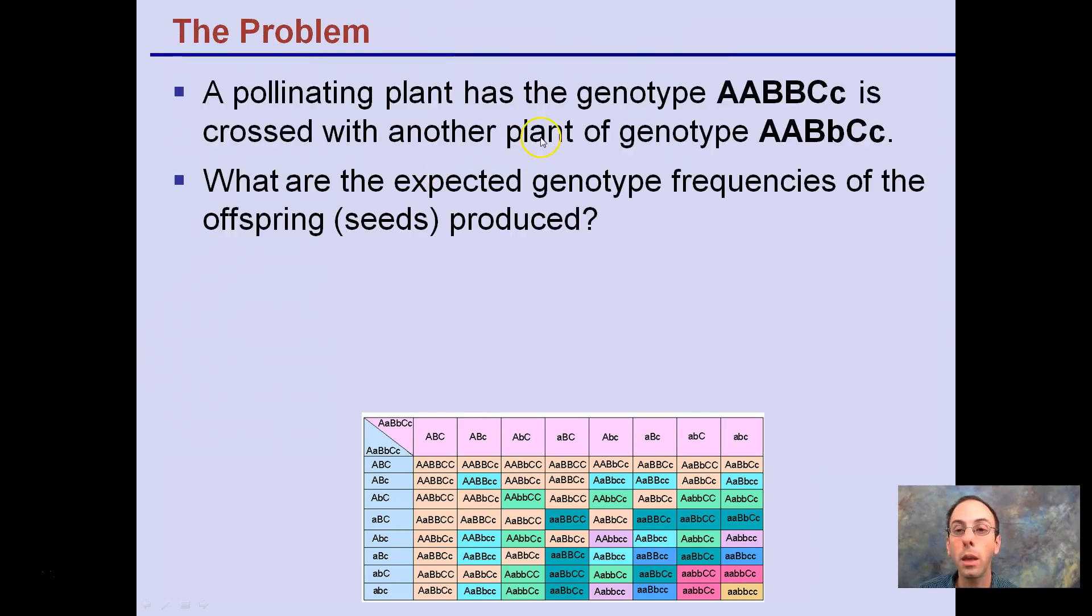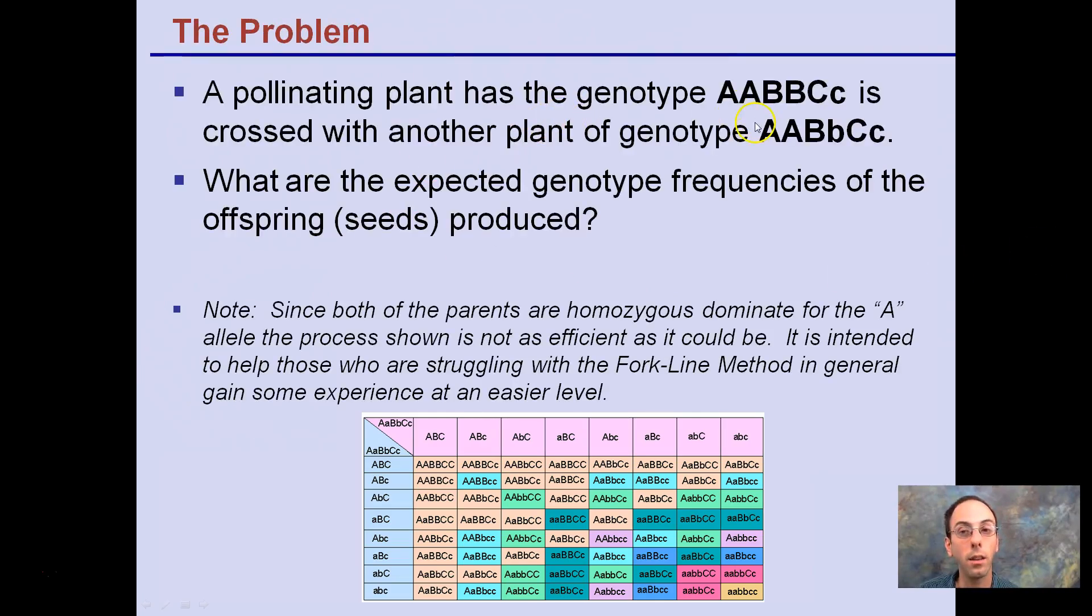The problem is: a pollinating plant has a genotype big A, big A, big B, big B, big C, little c, is crossed with another plant of genotype which is homozygous dominant for A, heterozygous for B, and heterozygous for C. What are the expected genotype frequencies of the offspring or seeds produced from this resulting cross?